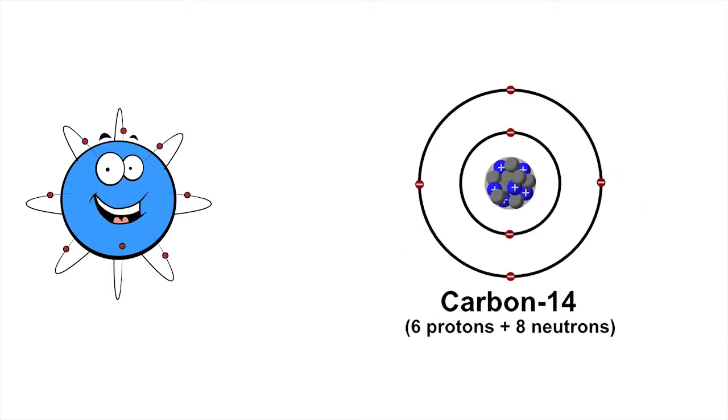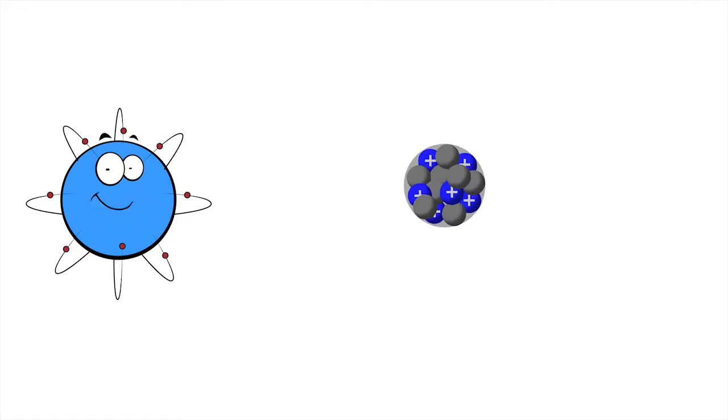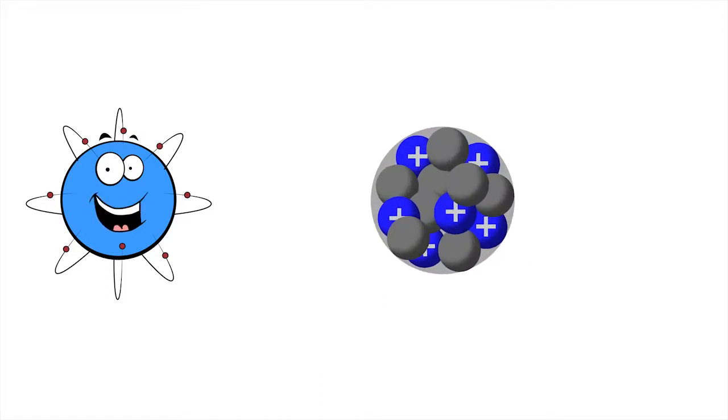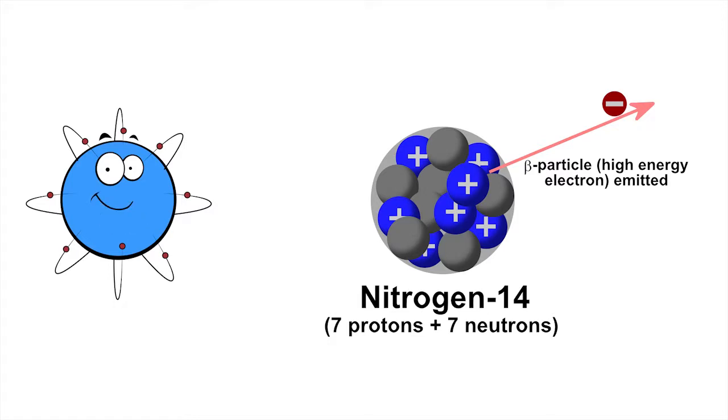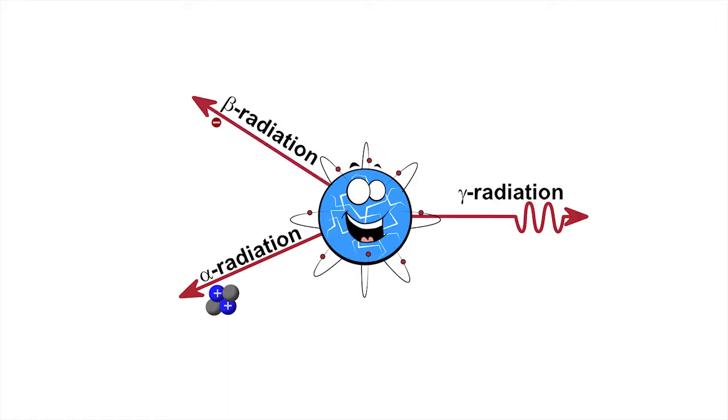Some of these isotopes, called radioisotopes, have nuclei that are unstable. They can undergo a process of radioactive decay where they break down into different atoms, at the same time releasing radiation. Three of the types of radiation that can be emitted are alpha, beta, and gamma radiation.